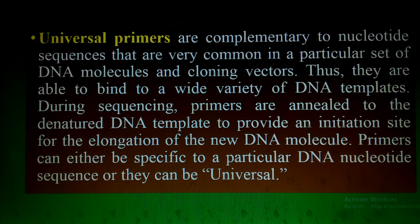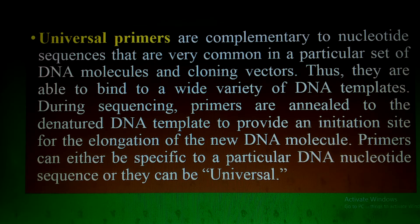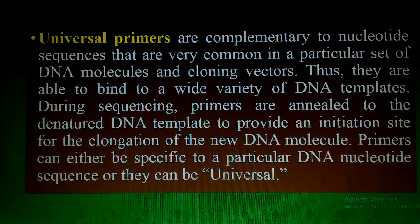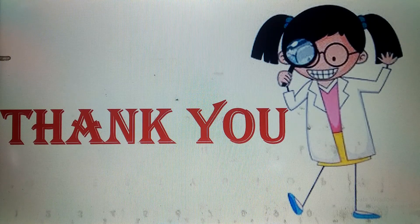Universal primers are used for the same genus containing different species, whereas degenerate primers can be used for any genus or species where the same protein — such as collagen — is present. For example, you can use degenerate primers to find the sequence from a dog, a cat, a human, or any other species or plant. I hope the lecture is clear. If you have any questions or additional information about universal primers, please share. Thank you very much. Allah Hafiz.